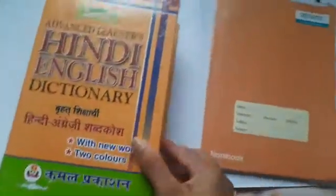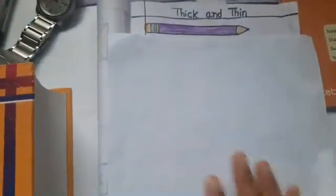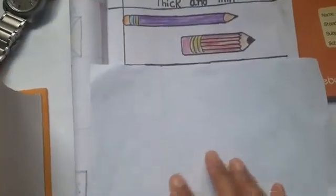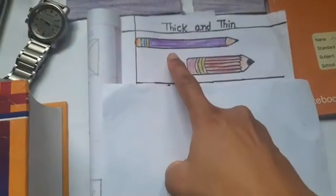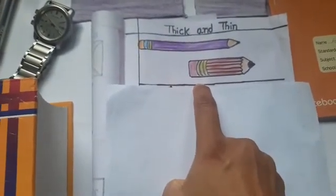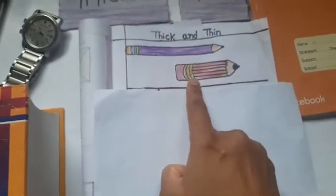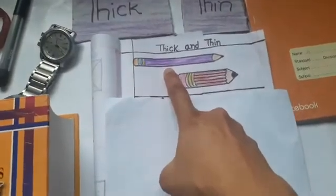Okay children, so understood. Thick, motha, thin, patla. Okay, now let's see few more examples for thick and thin. Now, this is pencil, so this is one pencil and this is one more pencil. In this, what you can see when you compare both the things that this is thick and this is thin.